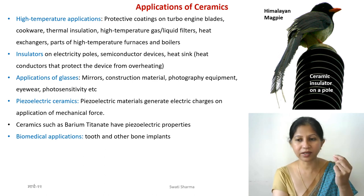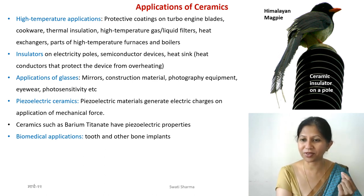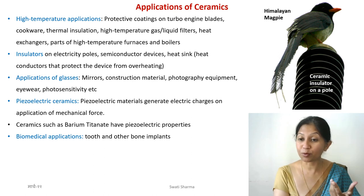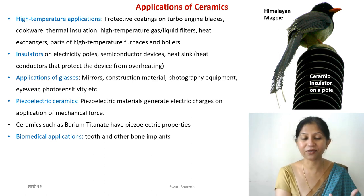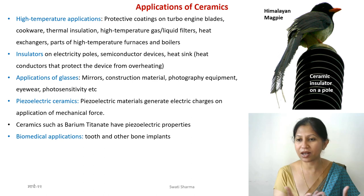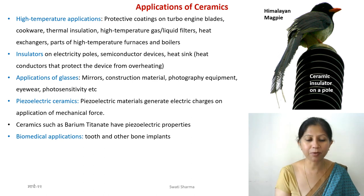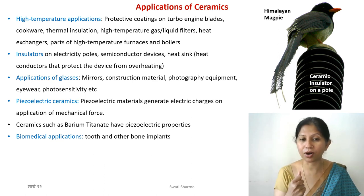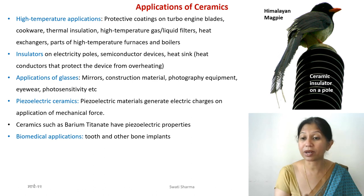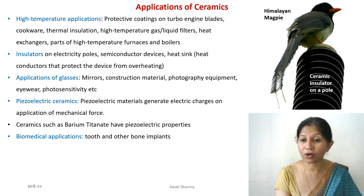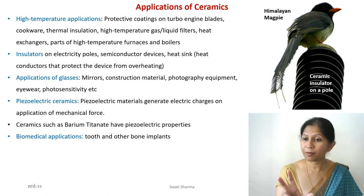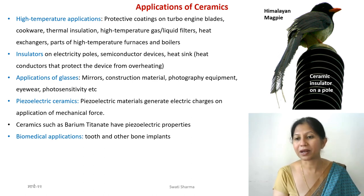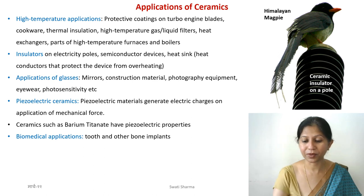For biomedical applications, our bones and teeth are natural ceramic materials. When we need to replace a tooth, we can replace it with a white ceramic or porcelain-like tooth. Different types of biocompatible ceramics are used for medical devices and biomedical implants. These are made with utmost care so they do not harm the body, and the primary material in many implants is ceramic.